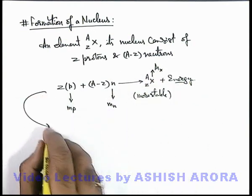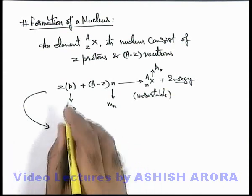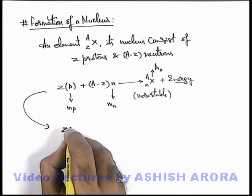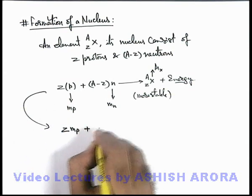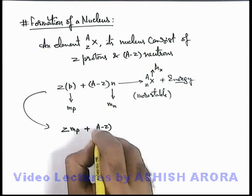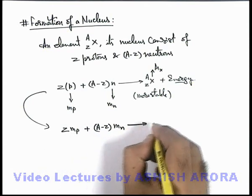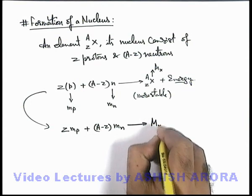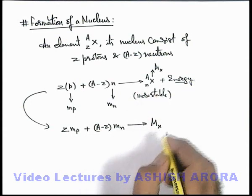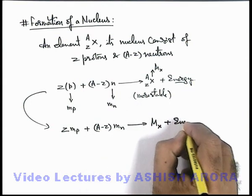Here the reaction can be written in form of the masses like Z times mass of protons when combined with A minus Z times mass of neutrons, it produces the single nucleus which is of mass mx and some energy is released.